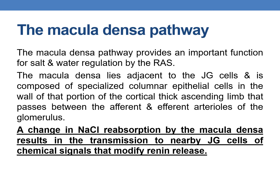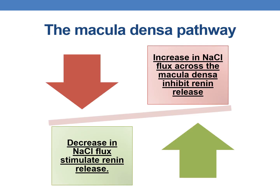Any change in sodium chloride reabsorption by the macula densa sends chemical signals to the adjacent JG cells, which modify renin release. Increase in sodium chloride flux across the macula densa inhibits renin release, whereas a decrease in NaCl flux stimulates renin release.